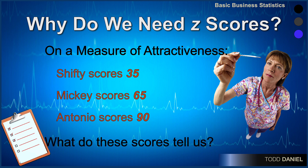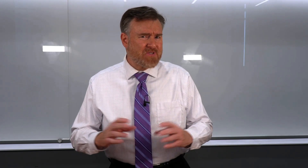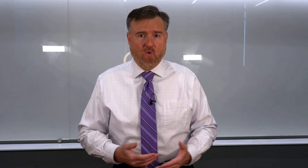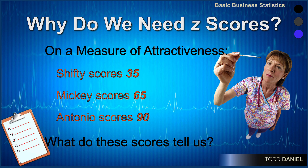What do these scores tell us? Well, as they stand, the scores don't really tell us very much. What we need is some kind of standard — something that tells us about a typical score, like the mean, our measure of central tendency. For instance, if the mean was 15, then all of these guys are above the mean. But if the mean is 100, then all of these guys have scored below the mean.